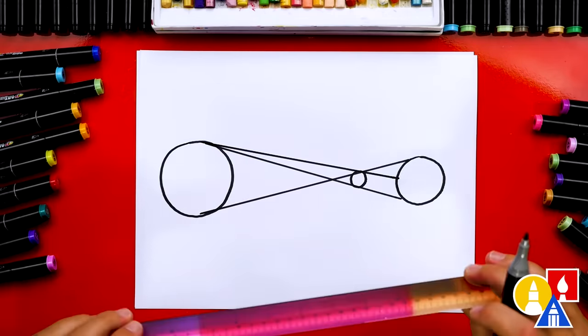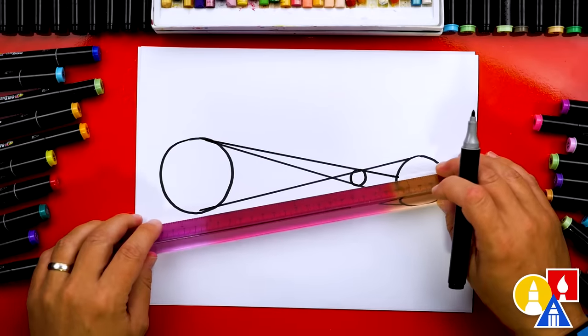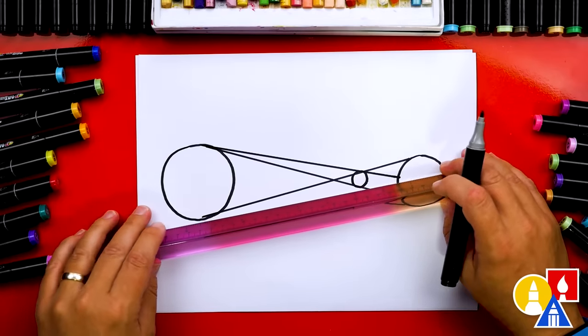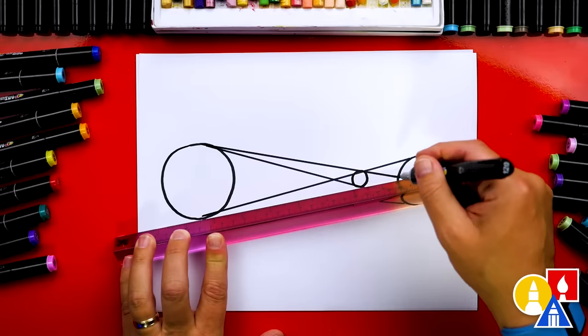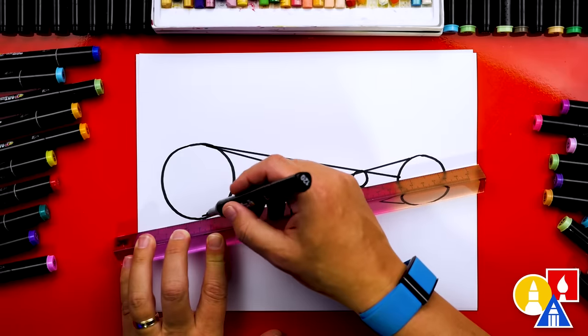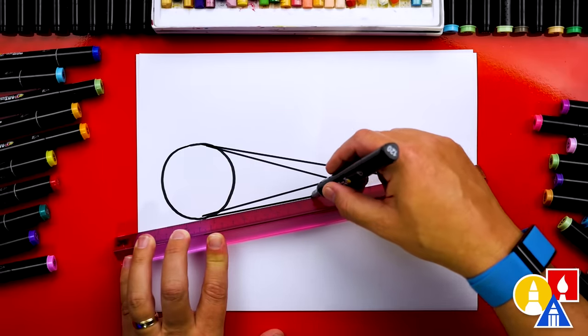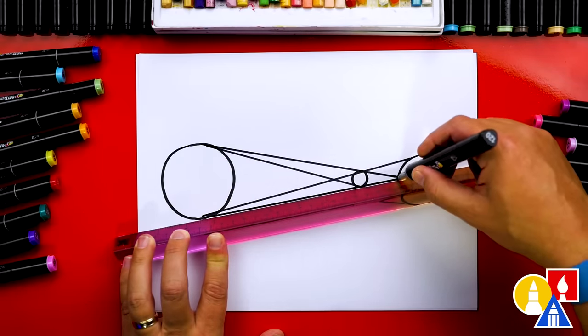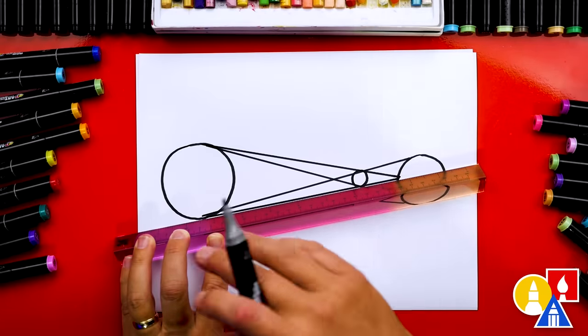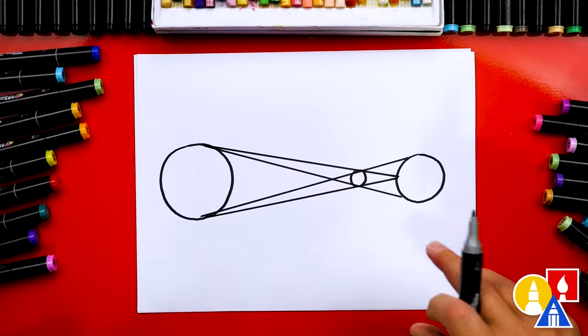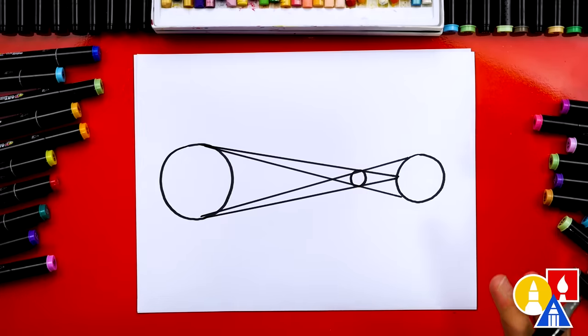Now we're going to do the same thing except with the bottom. So we'll line it up with the bottom of the sun and the bottom of the moon and it should come to a really small point where it touches the earth. It's okay if it doesn't look the same because your sun, earth and moon might be slightly different sizes or closer together or further away. So these lines may look a lot different on your paper. That's okay. We're just practicing and having fun.